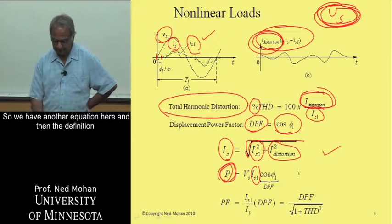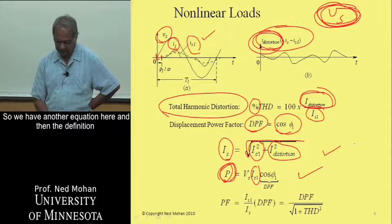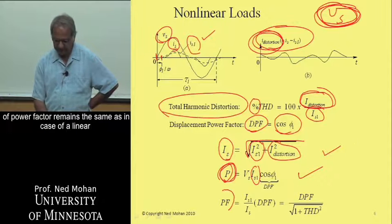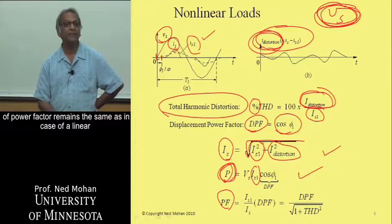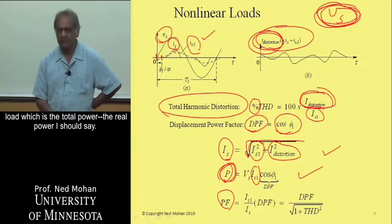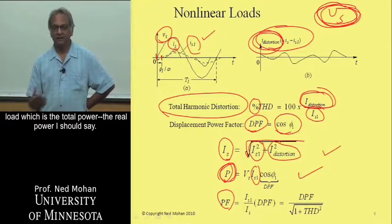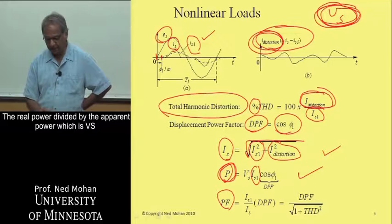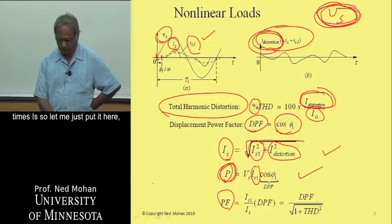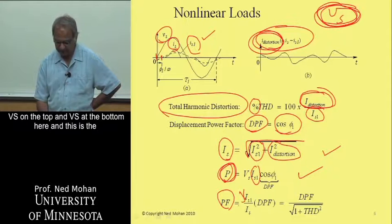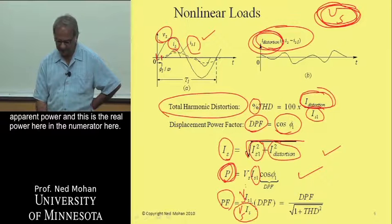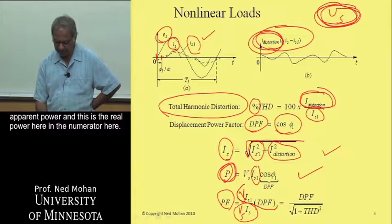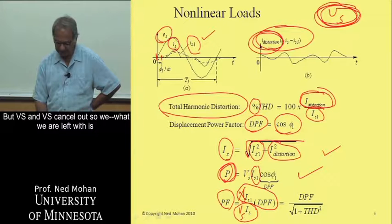So we have another equation here, and then the definition of power factor remains the same as in case of a linear load, which is the total power—the real power, I should say—is the real power divided by the apparent power, which is VS times IS. So let me just put it here, VS on the top and VS at the bottom here. So this is the apparent power, and this is the real power here in the numerator. But VS and VS cancel out.